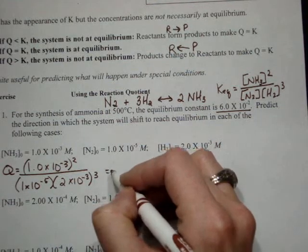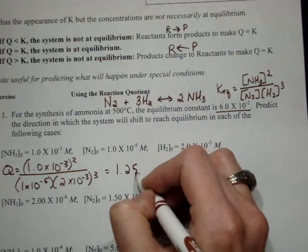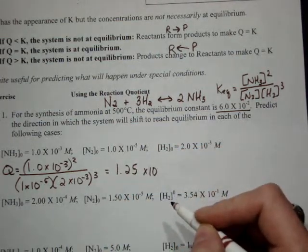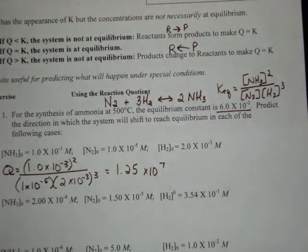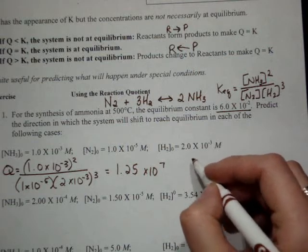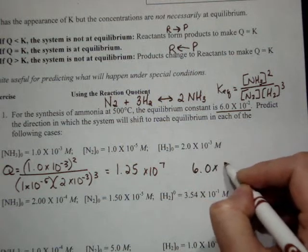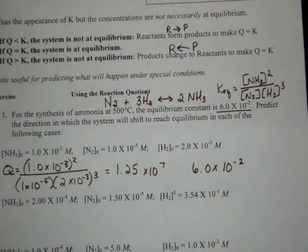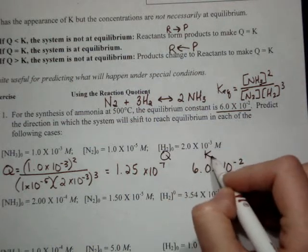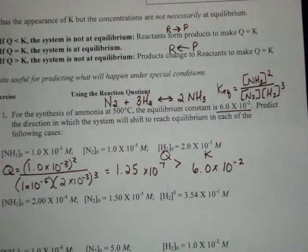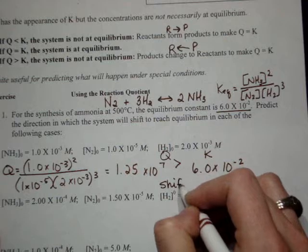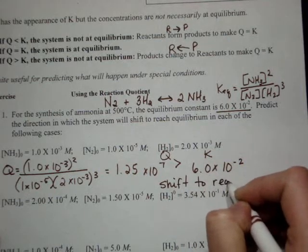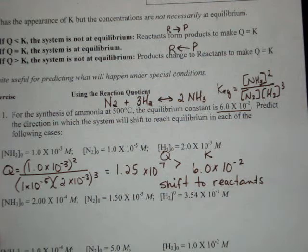And from that value, I get 1.25 times 10 to the negative seven. So that value has to be compared with the K value, which is 6.0 times 10 to the negative two. So in this case, Q is much greater than K. This suggests that the reaction will shift toward the reactants. Shift to reactants, or more reactants will form. We'll do the same setup for the other two scenarios.